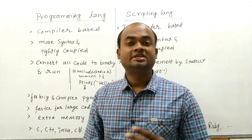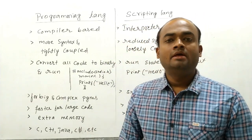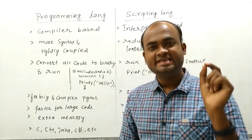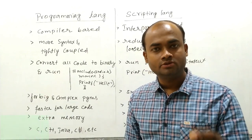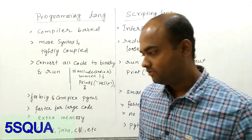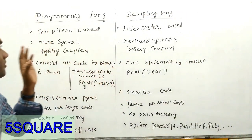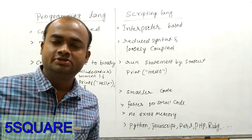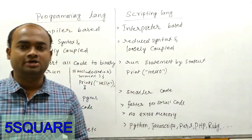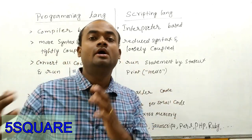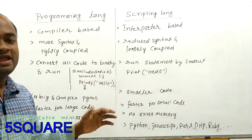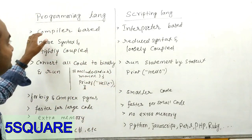You need to understand that every scripting language is a programming language, but the way the code is converted differentiates between a programming language and a scripting language. Both programming languages and scripting languages that we use today are high-level languages. There should be a converter to convert this high-level language into machine code, because the machine only understands binary code.